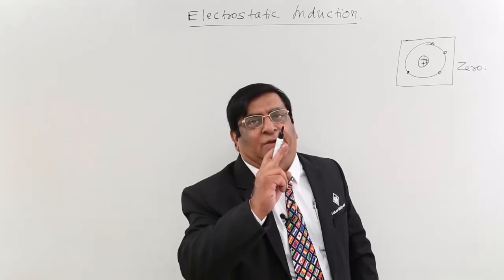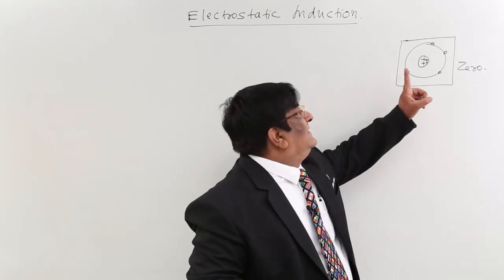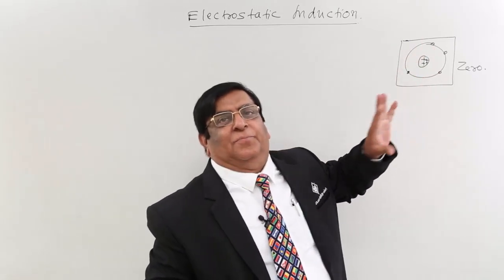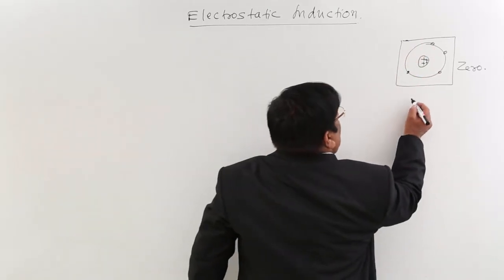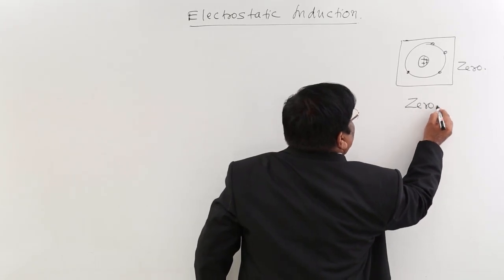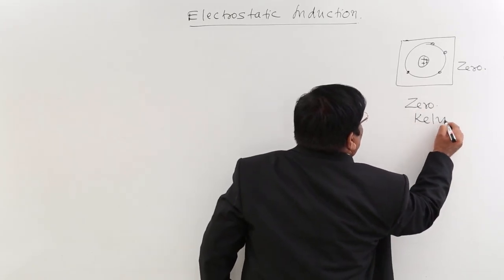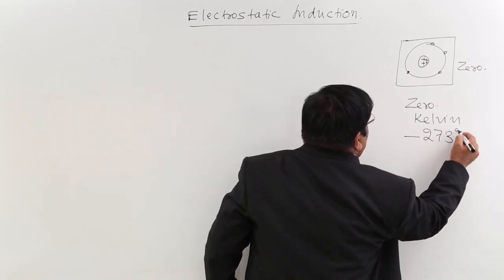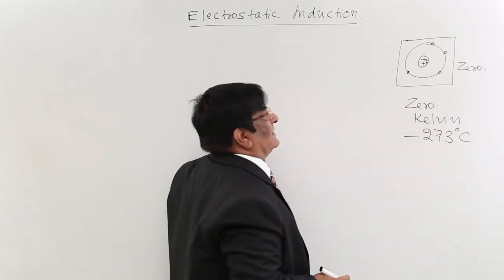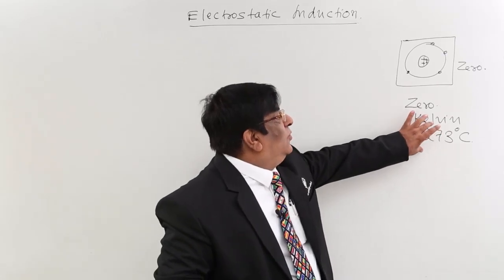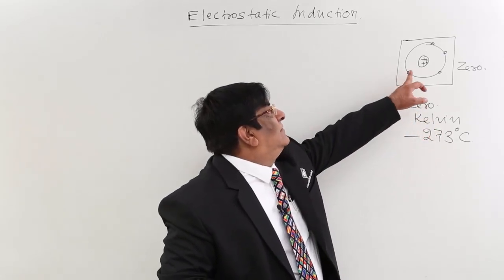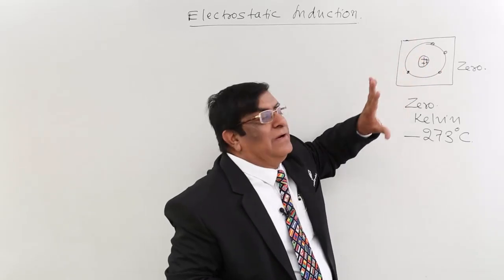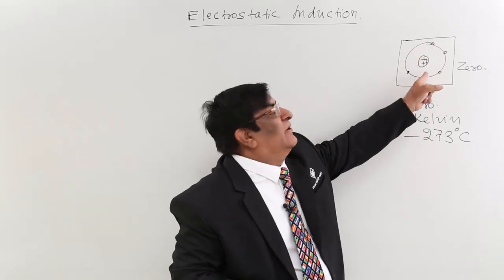This situation is when the temperature of a body is zero Kelvin, which is minus 273 degrees Celsius. At such a cold temperature, electrons have only enough energy to rotate around the nucleus.